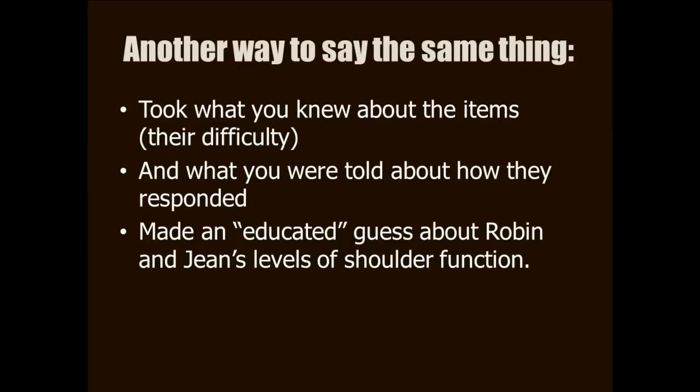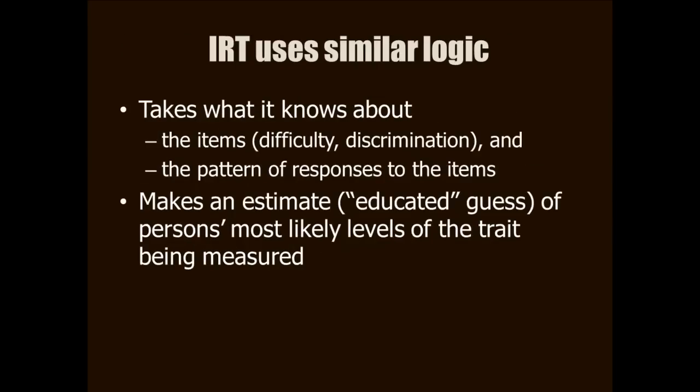Now I'm going to say the same thing in a slightly different way. When you figured this out, you discriminated between Jean and Robin's shoulder function like this: you took what you knew about the items — you could tell that some were harder than others — and then you added to that knowledge what you were told about how Jean and Robin responded to each item. Then you made an educated guess about who had the higher shoulder function. Notice what you did not use: you did not consider the fact that both Jean and Robin had a score of six. In fact, if you had used this, you would have made a bad guess. As you work through the other modules in this series, you will see that IRT uses the same logic in discriminating levels of a trait.